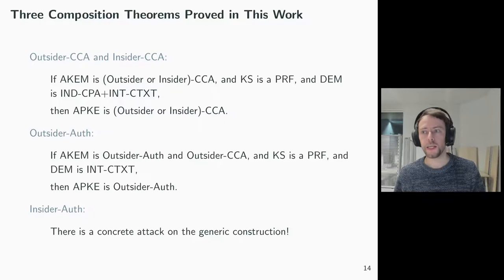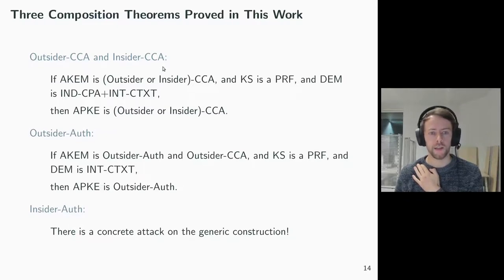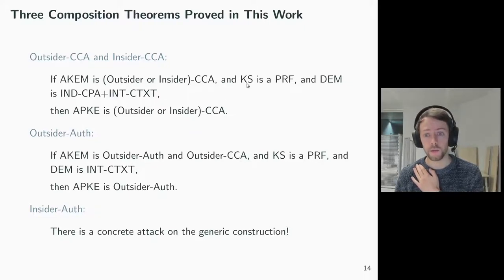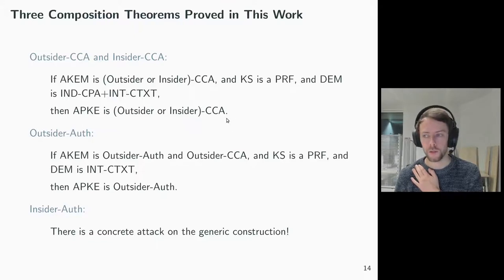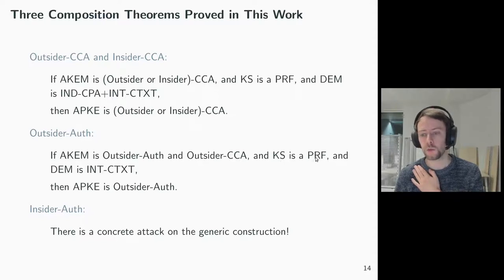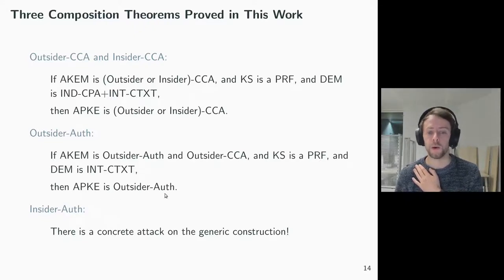With these security notions in mind, we can understand the three composition theorems that we prove in this work. For outsider CCA and insider CCA, the theorem is as follows: if the authenticated key encapsulation mechanism is outsider or insider CCA secure respectively, and the key schedule is a PRF, and the data encapsulation mechanism is IND-CPA and INT-CTXT secure, then the authenticated public key encryption scheme is outsider or insider CCA secure respectively. For outsider-out, the theorem actually requires that the ACAM is outsider-out and outsider CCA secure, and here too the key schedule needs to be a PRF and the DEM needs to be INT-CTXT, such that the authenticated public key encryption scheme is outsider-out secure.